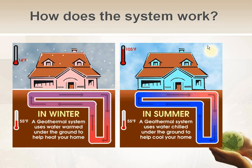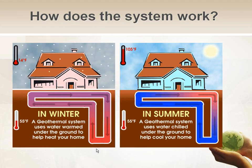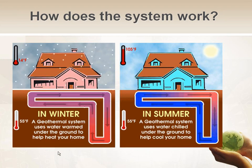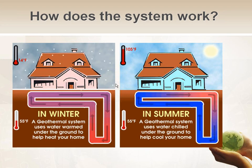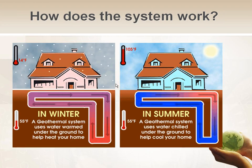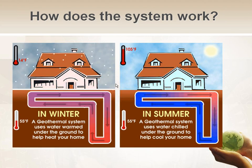Looking at how a geothermal system actually works — the ground temperature is 55 degrees year-round. In the winter, we're taking energy from the earth and moving it into the home. We're pumping heat from the ground to the house — that's where the term heat pump came from. In the summer, we're taking heat out of the home and putting it into the ground. The nice thing is the system is cyclical — utilizing geothermal in the Midwest for both summer and winter benefits us because we charge the ground with heat in summer and use that extra heat in winter.